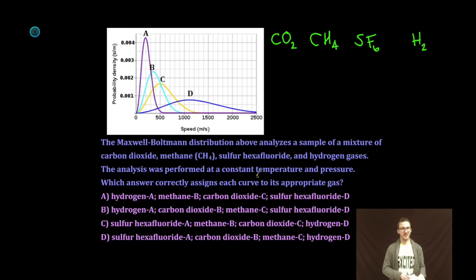Now, importantly, the analysis was performed at constant temperature and pressure. So all we need to recognize is that the curve that has the greatest average velocity is going to be the lightest gas. And the curve that has the lowest average velocity is going to be the heaviest gas.